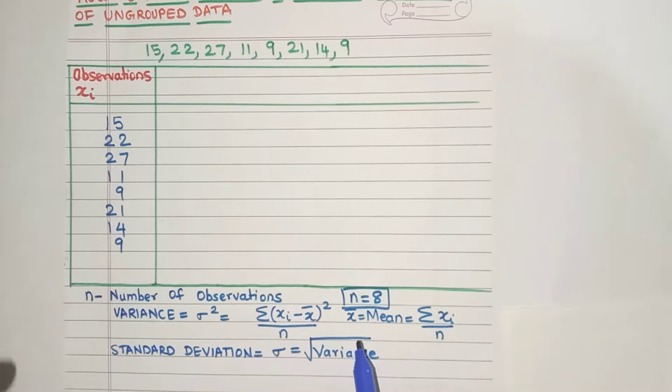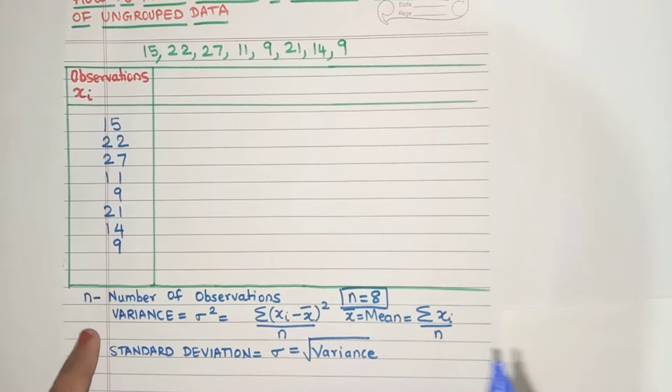Now let's see the formula. What else do we need? Yes, we need x̄. What is x̄? x̄ is the mean of the data. Now because this is ungrouped data, this is the formula that we'll use: Σxi by n. And what is sigma? Yes, sigma is the Greek symbol for summation. So that means we have to add up all the xi values.